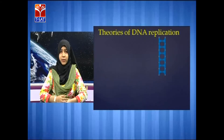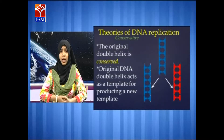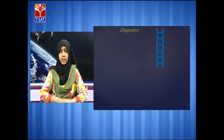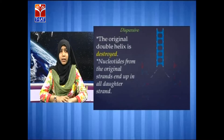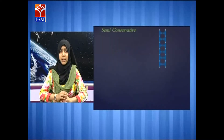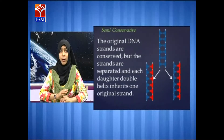Genetic information transfer — theories of DNA replication. There are three theories of DNA replication. First is conservative, in which each daughter molecule will consist of one old strand and the newly synthesized strand will be present in the second daughter molecule. Second is dispersive, in which the old parent DNA will break into pieces and the two daughter molecules will have both new and old synthesized segments. Third is semi-conservative, in which each daughter molecule will have one old strand and one newly synthesized strand.